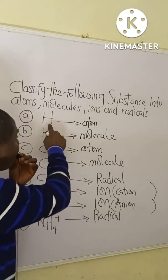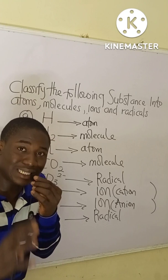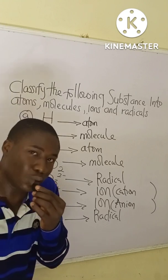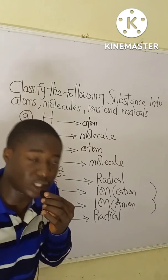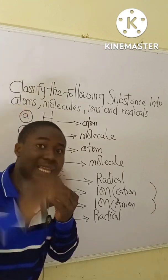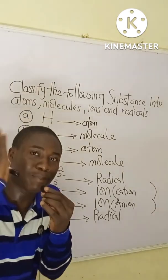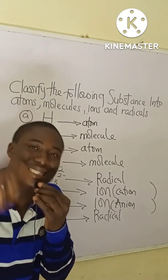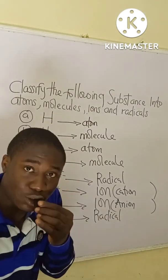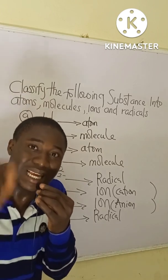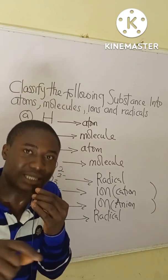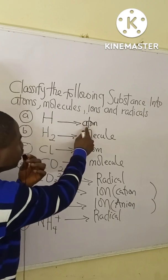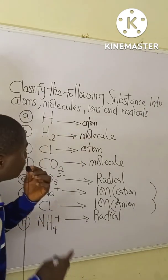Looking at option A, which is simply H — whenever we see the symbol H in chemistry, we simply call it hydrogen. When that particular symbol is standing alone, we say that element is existing in its atomic state. So looking at H here, we simply call it a hydrogen atom.